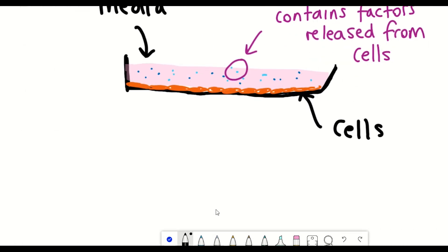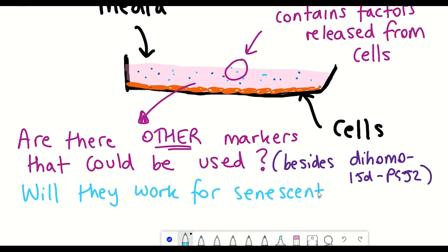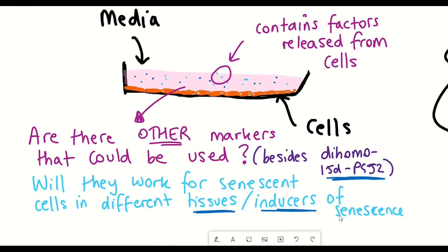So what would be interesting would be to see if there are other markers now that can be used to detect senolysis, in addition to this dihomo-15d PGJ2, had to say it one more time, and also to see if this biomarker could be used for different types of senescent cells. As senescent cells aren't all the same, they arise in different contexts, in different tissues, induced by different ways. And so it would be important to investigate further if this prostaglandin accumulates broadly in senescent cells, and whether it could always be effective.